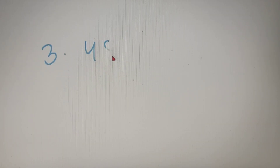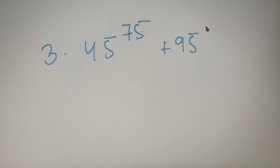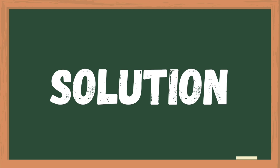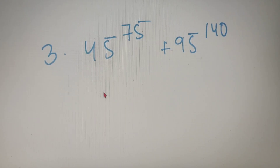Now for our third example, we have to find out the sum of the last two digits of the number 45 raised to the power of 75 plus 95 raised to the power of 140. I would like you to try to solve this question first by yourself and then come back for the solution. I hope that you have solved this question by yourself and were able to find the answer, and if you didn't, let's check the solution.